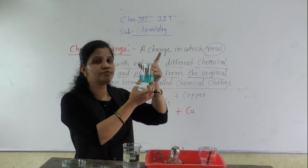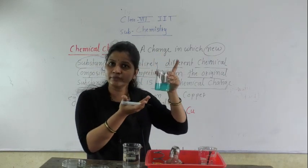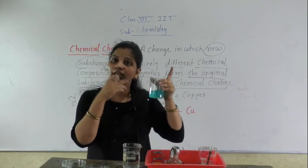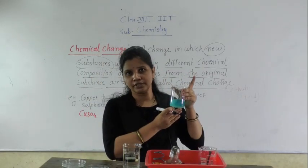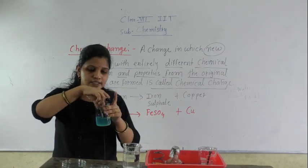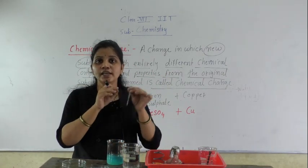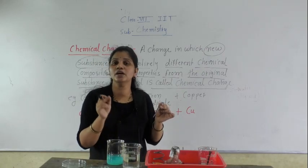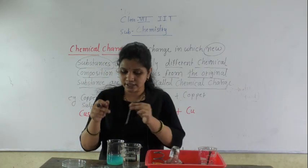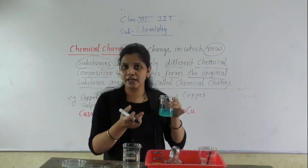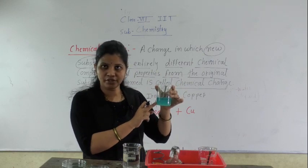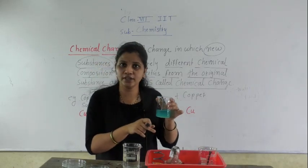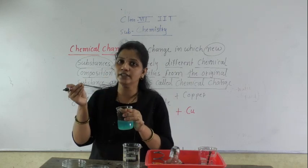The color of the solution is blue, but after some time you will see the color of the solution becomes green. Why green? Because now the iron sulfate solution is formed. And on this nail, after some time, you will see a brown color layer, and that brown color layer is known as copper. Here I have two iron nails — this is a new one, but this is an old one — and you can see the brown color layer, which is the copper layer, has formed on it.